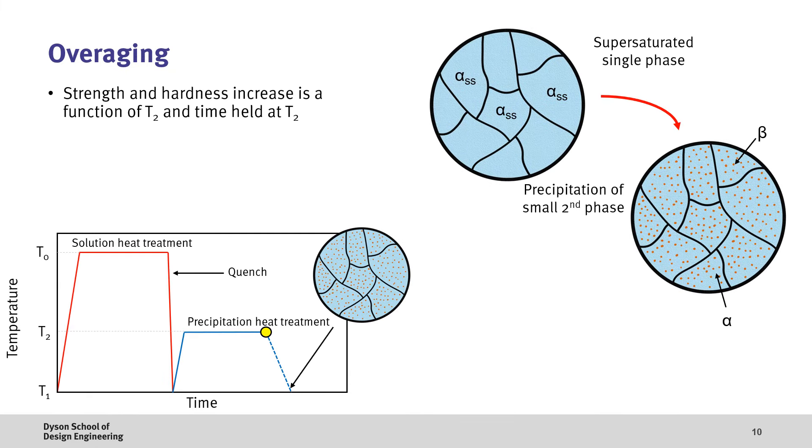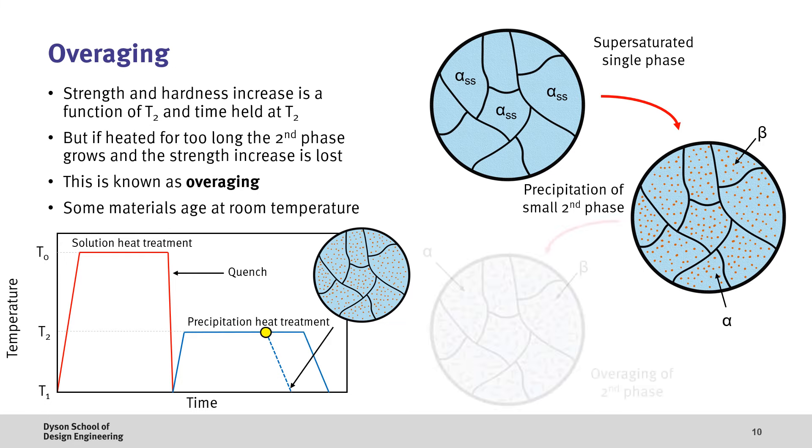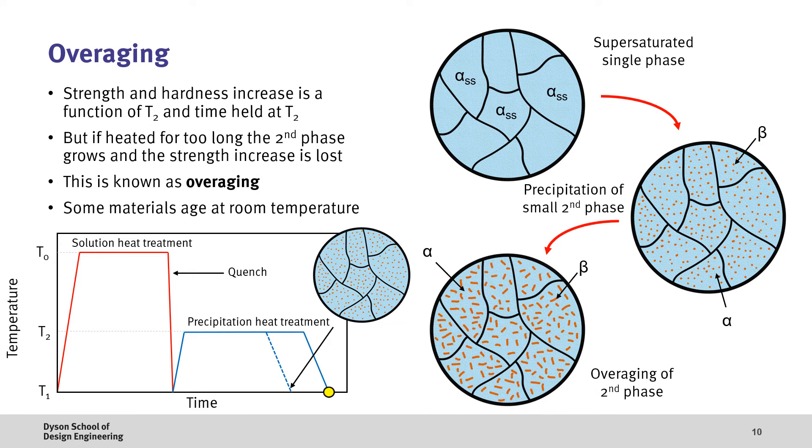However, if the heat treatment process is not properly controlled, we can lose the beneficial strengthening properties. Now, we know strength and hardness increase is a function of temperature and time, which controls the precipitation of the highly dispersed and fine beta particles from the supersaturated alpha phase. However, if the material is heated for too long, the second phase keeps growing such that the thermodynamic structure is achieved, leading to a loss of the strength increase. This effect is called overageing, and can happen at room temperature with some materials.